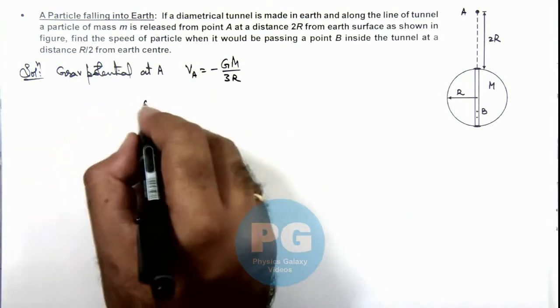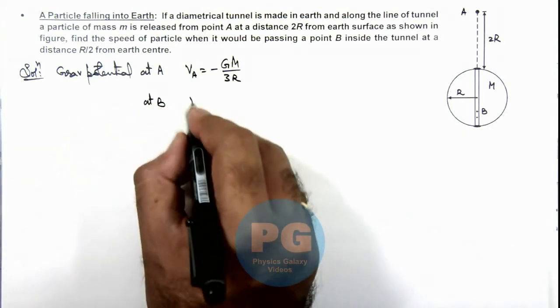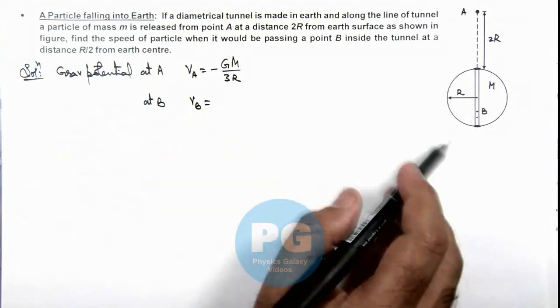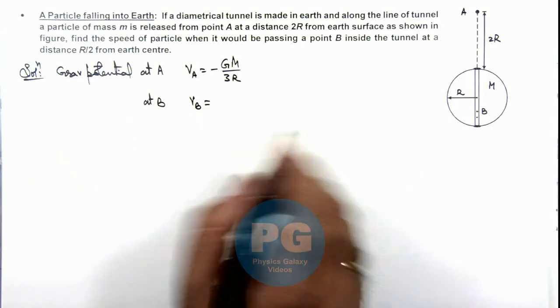Similarly, at B if we calculate the gravitational potential as it is inside the spherical earth, we use the relation.